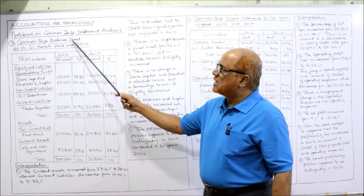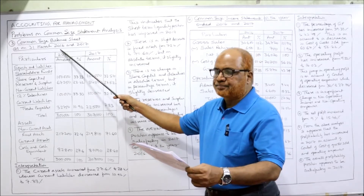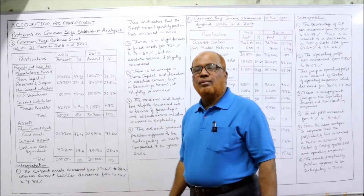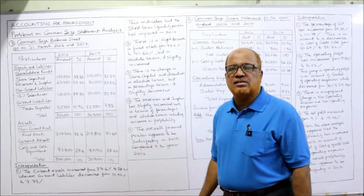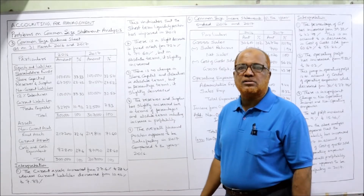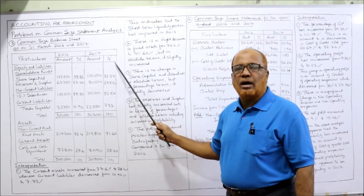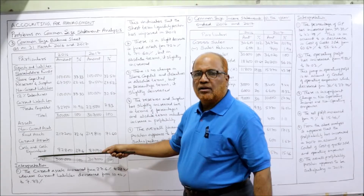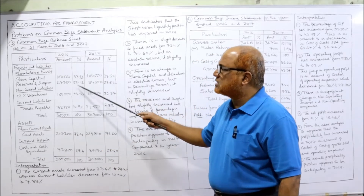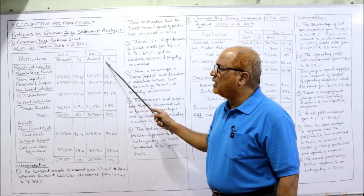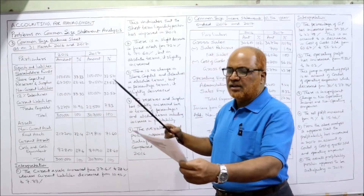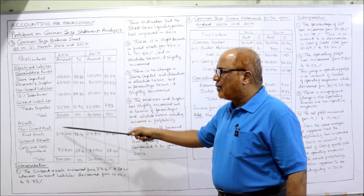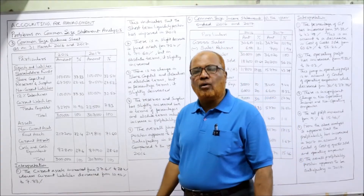Now we prepare the common size balance sheet as on 31st March 2016 and 2017. We make two broad columns — first for 2016, second for 2017 — each with sub-columns for amount and percentage. The same format from the problem is copied, and the same amounts are taken: share capital 1 lakh for both years, reserves and surplus 67,250 for 2016 and 84,500 for 2017.